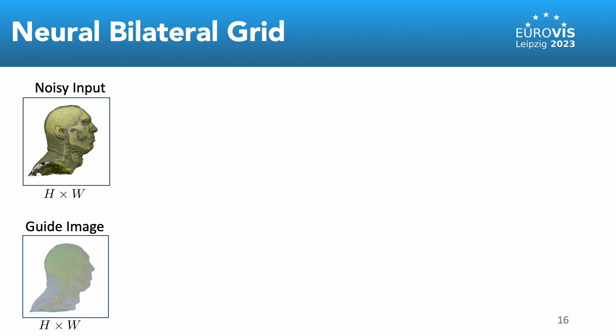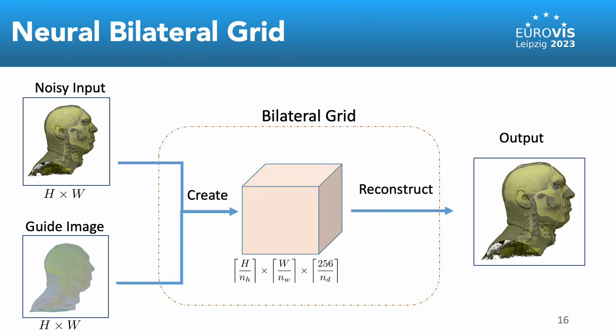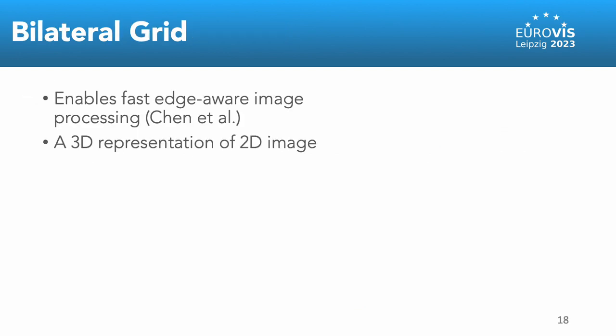This guide image and the noisy one-sample-per-pixel input are then used to denoise the image using a bilateral grid of a lower resolution in the second step. A bilateral grid is a discrete 3D representation of the 2D image that enables fast image processing while preserving strong edges.